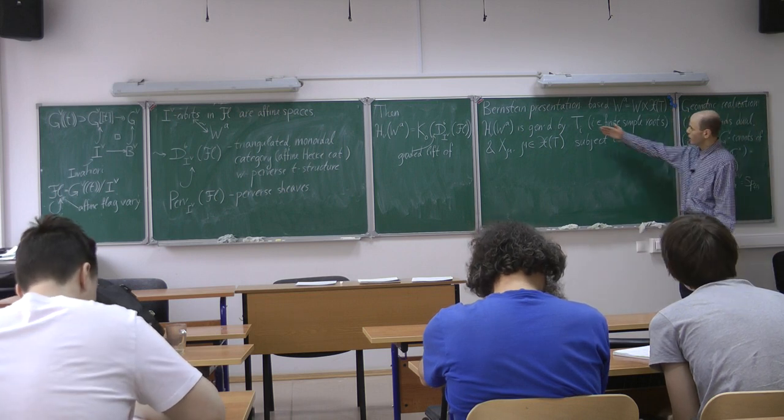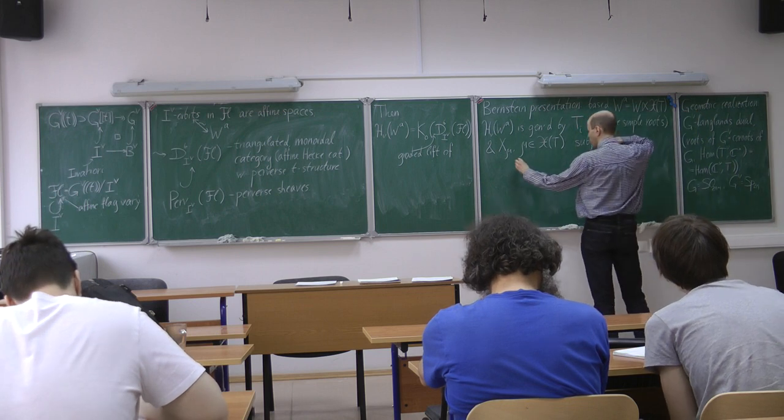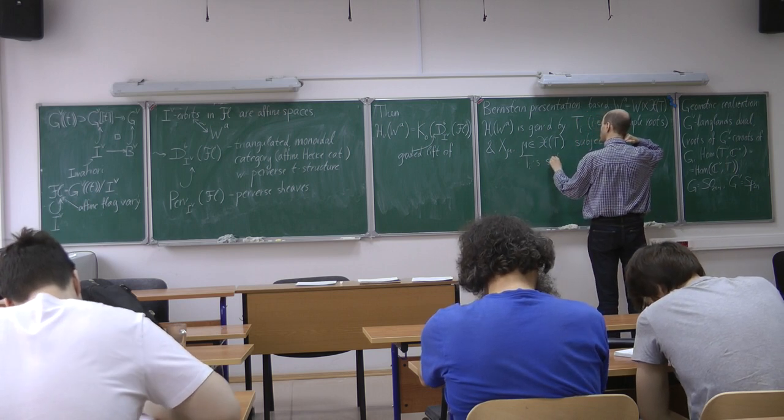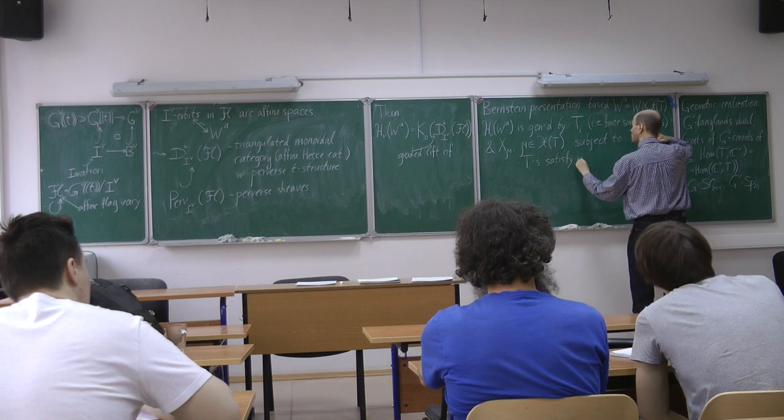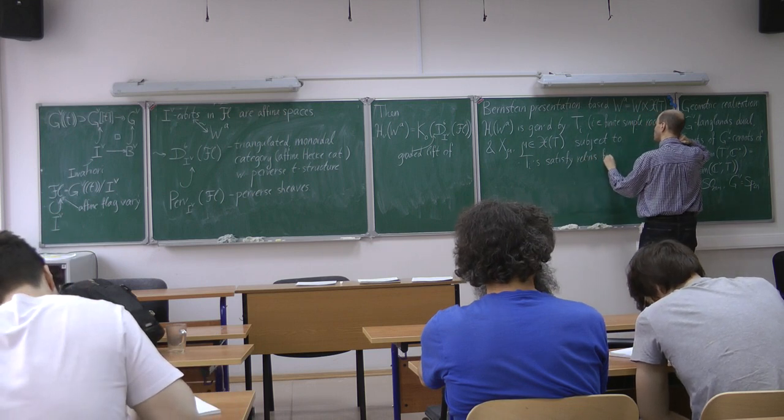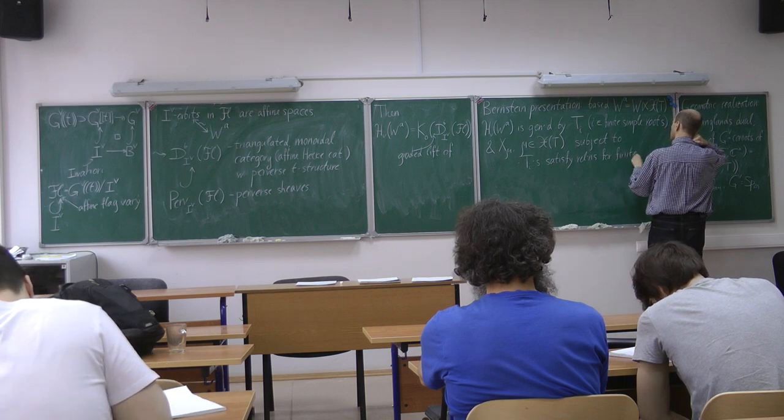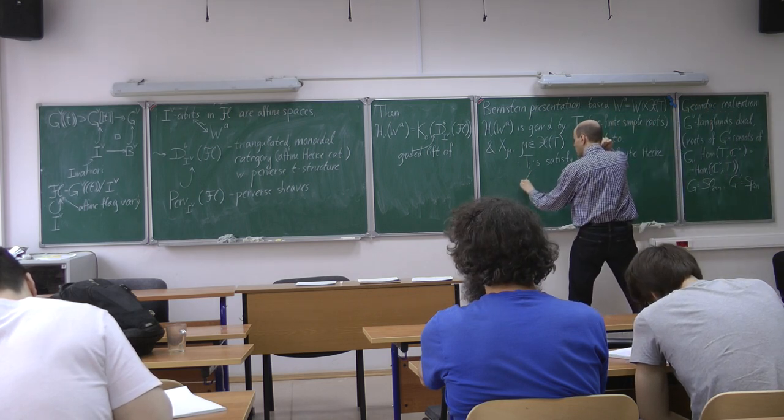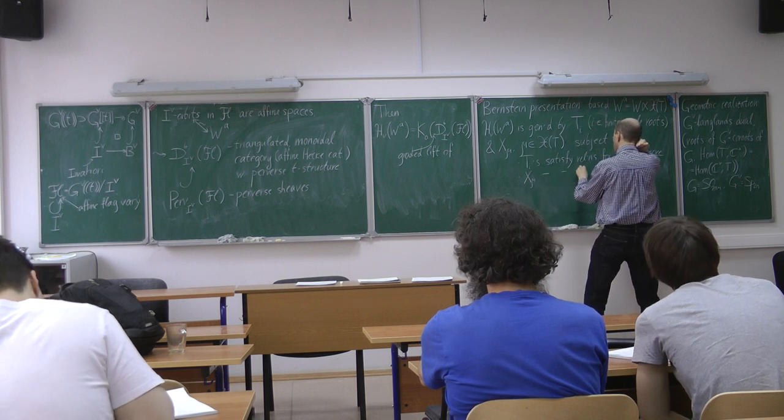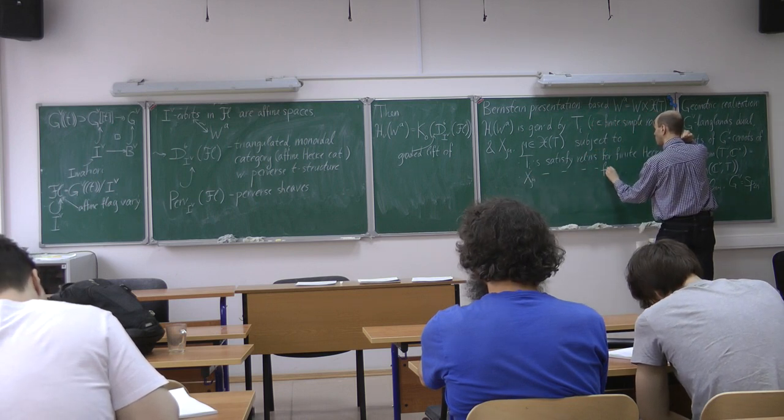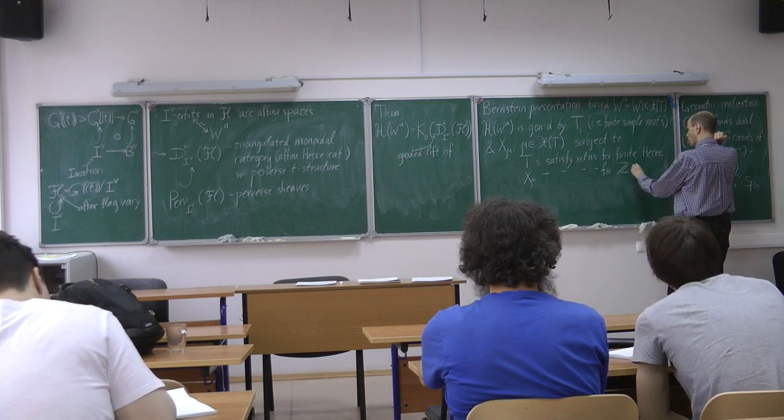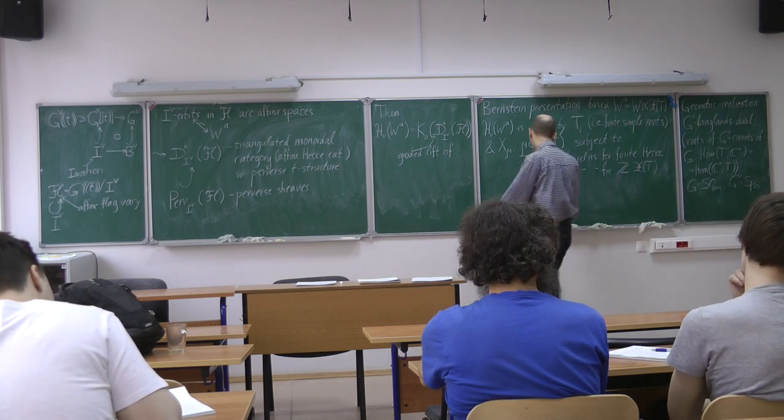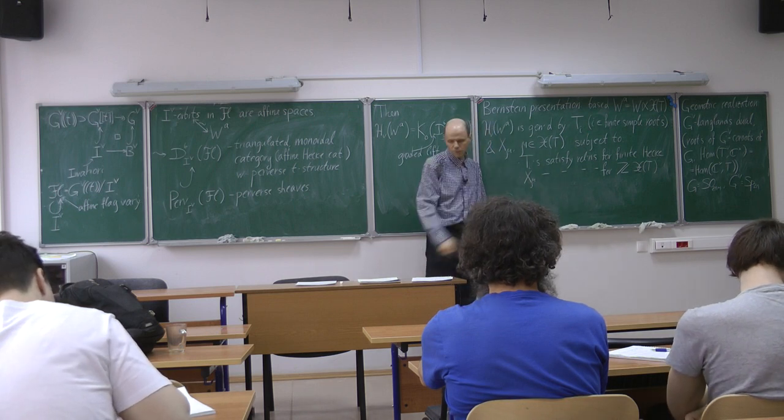So, there are relations among the T i's and those are usual Hecke relations. So, T i's satisfy relations for affine Hecke algebra. x sub mu satisfy relations for the group algebra of the character lattice. And finally, there is a cross-relation between T i's and x mu's. So, let me write it down.